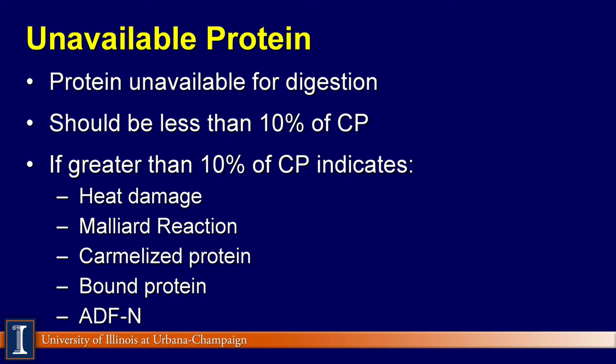If the unavailable crude protein in forage harvested at the correct maturity with a low grass content is greater than 10%, it indicates the forage has heated during storage. The heating causes a Maillard reaction between amino acids and sugars, which renders amino acids — specifically lysine — unavailable for digestion. The protein is caramelized and has a sweet taste and a caramel to black color.